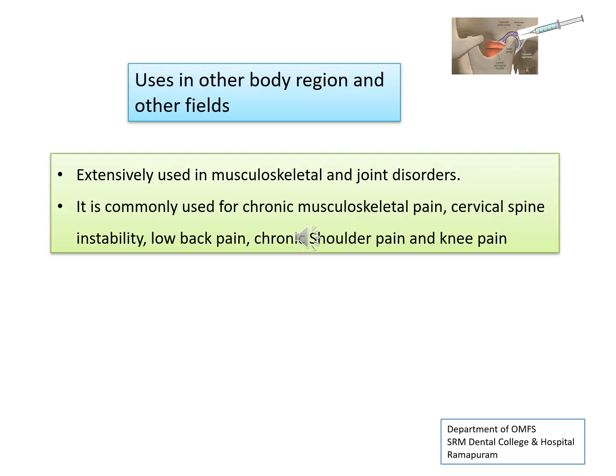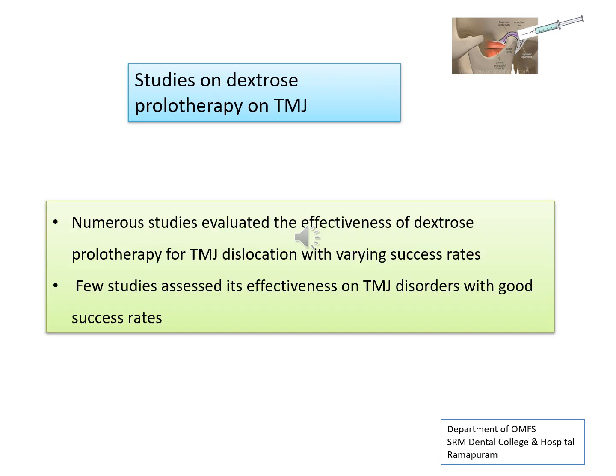Prolotherapy has been used extensively for musculoskeletal and joint disorders of the body. It is commonly used for chronic musculoskeletal pain, cervical spine instability, low back pain, and chronic shoulder and knee pain. Numerous studies have evaluated the effectiveness of dextrose prolotherapy for TMJ dislocation with various success rates, and few studies assess its effectiveness on TMJ disorders with good success rates.